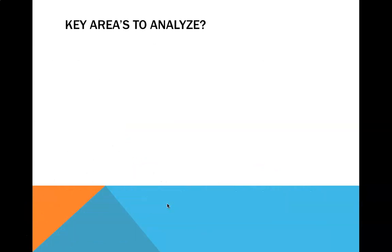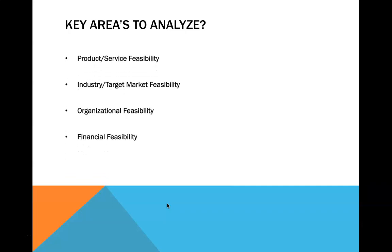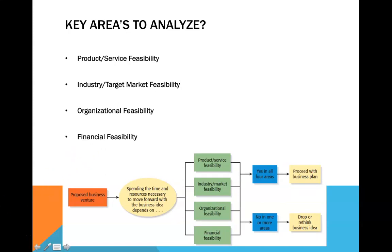When you google feasibility analysis you'll find a number of different areas that can be analyzed. We focus on four key areas — and this is what you'll be asked to focus on for your assessment: product or service feasibility, industry and target market feasibility, organizational feasibility, and financial feasibility. We'll go into these in some detail over the next 10 to 15 minutes.